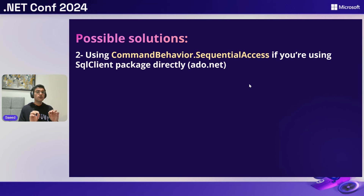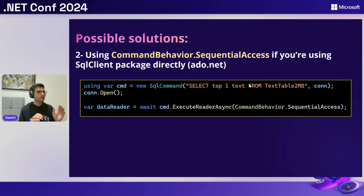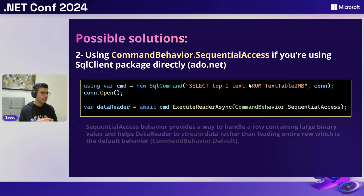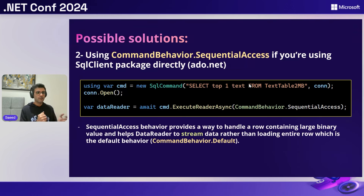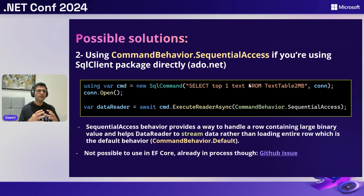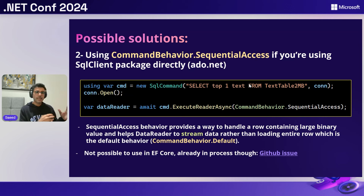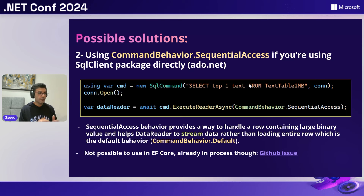Another solution, if you're using the SqlClient directly, is to change the command behavior and set it to sequential access. What sequential access does is stream the data as it comes from SQL Server, instead of the default behavior of waiting for and loading the entire row into memory. This causes much less memory allocation and better performance. Unfortunately, we cannot use sequential access in EF Core because EF Core uses the default behavior by default, though there is a GitHub issue tracking this.